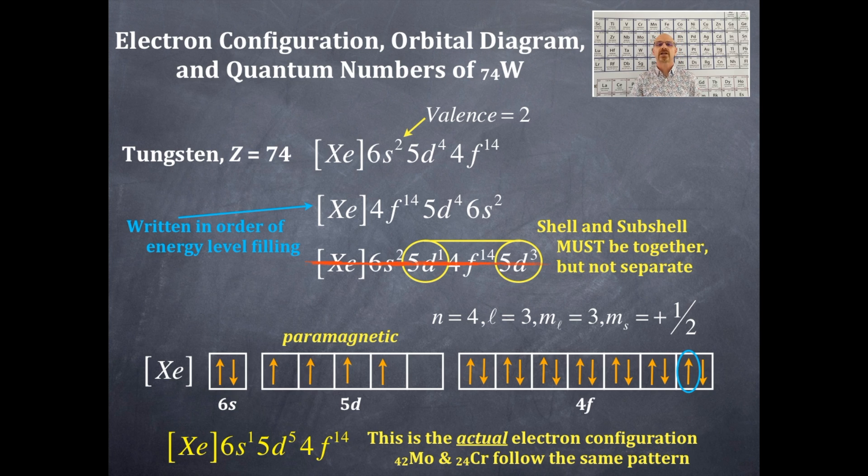This is the actual electron configuration for tungsten. Chromium, molybdenum, and tungsten follow the same pattern. Their actual electron configuration is different than that which is predicted. All of those have a d sublevel that is half-filled completely and the s sublevel is half-filled as well. That is lowest in energy. This is similar to copper, silver, and gold. Half-filled and completely filled are lower in energy.